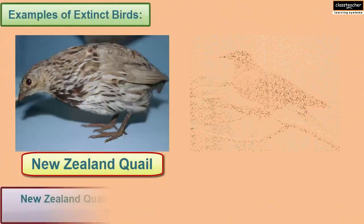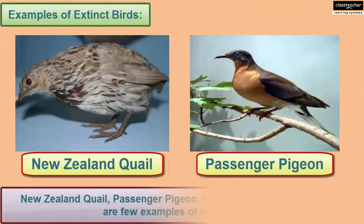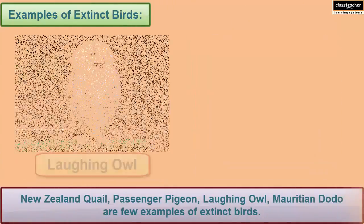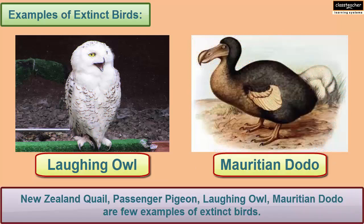New Zealand Quail, Passenger Pigeon, Laughing Owl, Moa, and Dodo are a few examples of extinct birds.